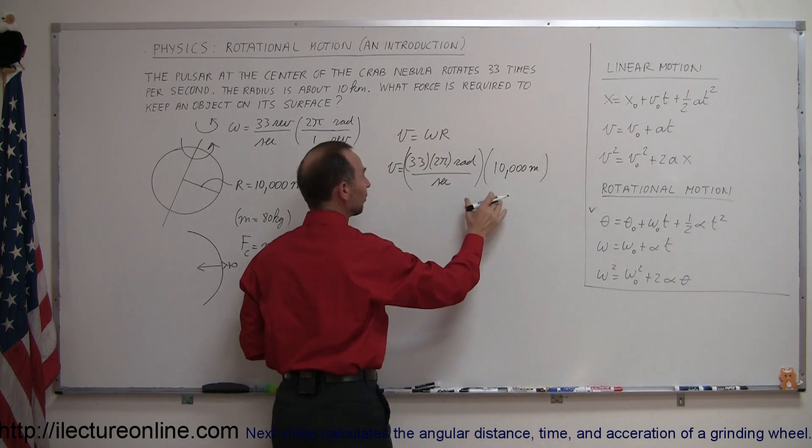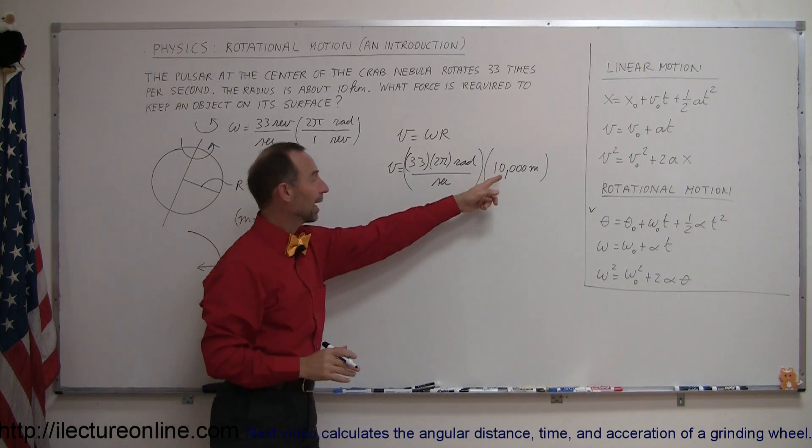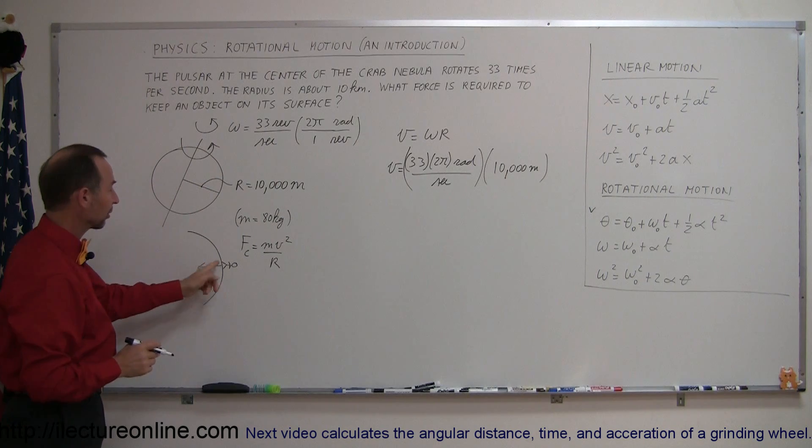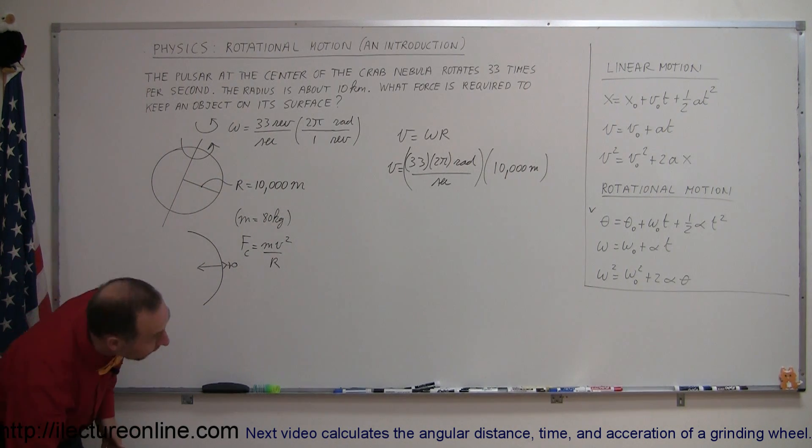So now we know that since radians is one of those non-units, we have now meters per second, which is the tangential velocity of an object on the surface of that star. So let's go ahead and calculate that.